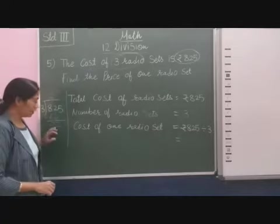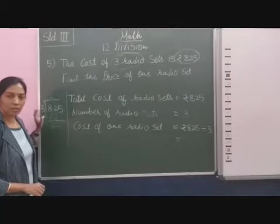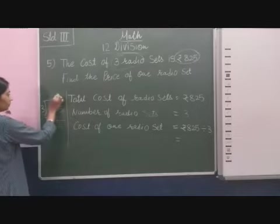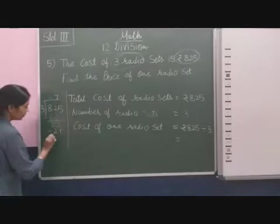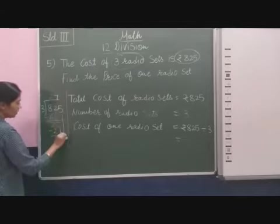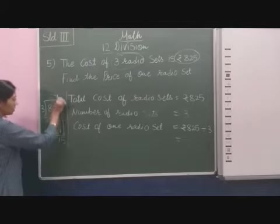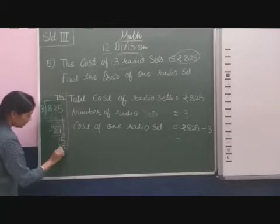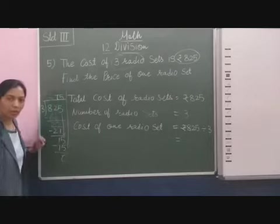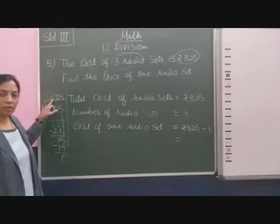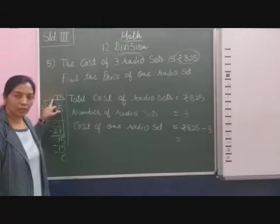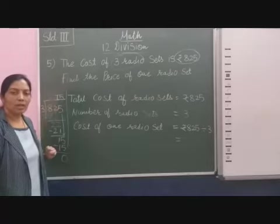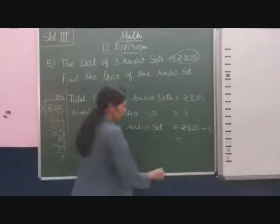3 sevens are, here 22 divided by 3. So 3 sevens are 21. 1 remain. We take here 5. 3 fives are 15. Remain 0. So the cost of 1 radio is equal to Rupee 275. So I will write here Rupee sign 275.